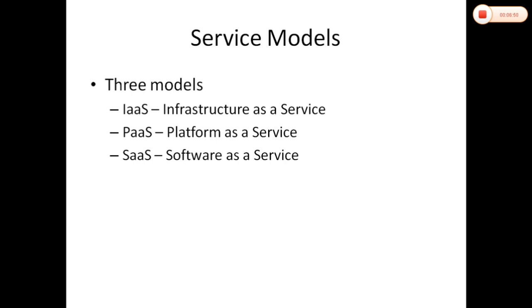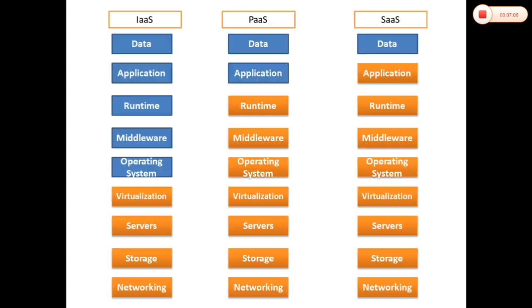There are three cloud service models: IaaS, PaaS, and SaaS — Infrastructure as a Service, Platform as a Service, and Software as a Service. For IaaS, you can use networking, storage, servers, and virtualization.